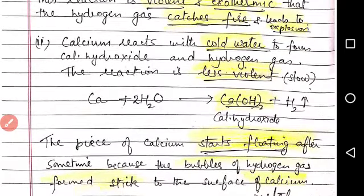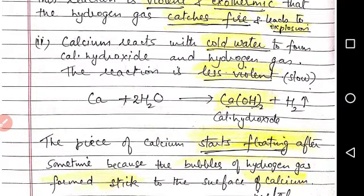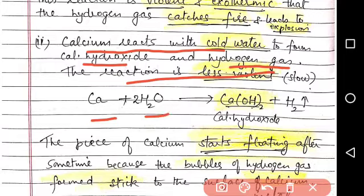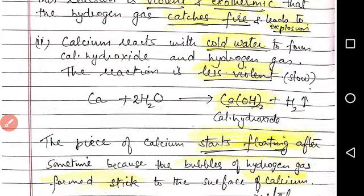Second type of reaction, calcium. When calcium reacts, it also can react with cold water only. But here, the reaction is not so violent as in case of sodium and potassium. So calcium hydroxide is formed and hydrogen gas is formed. The reaction is Ca + 2H2O gives Ca(OH)2 + H2. The piece of calcium starts floating after some time because the bubbles of hydrogen gas produced stick to the surface of calcium.